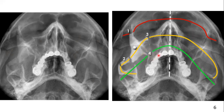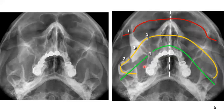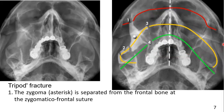Here you can see a disruption. By following the Campbell's lines on this radiograph, you can identify that this zygoma is fractured at four points — from the temporal bone at the zygomatic arch, from the maxillary bone, and from the infraorbital rim at the orbital floor. All four points where the zygomatic bone is attached are fractured. This type of fracture is also known as a tripod fracture.